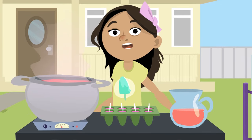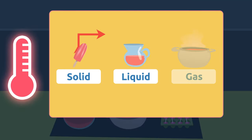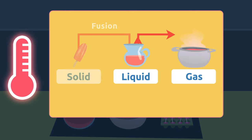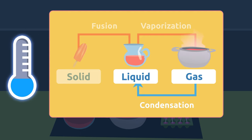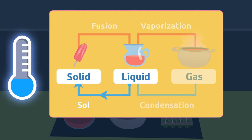These are the changes in states of matter — let's recap. If we heat solid matter, it becomes a liquid: that's fusion. If we heat liquid matter, it becomes a gas: that's vaporization. These two processes can also occur in reverse when we cool matter. If we cool a gas, it becomes a liquid: that's condensation. If we freeze liquid matter, it becomes a solid: that's solidification.